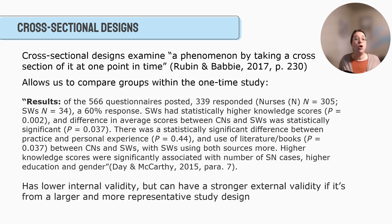So cross-sectional designs examine, according to Ruben and Babi, a phenomenon by taking a cross-section of it at one point in time. Well, you can still compare groups in that study. So this is an example of a study that I found, a social work study. And what they did is they sent out 566 questionnaires. Now about 339 people responded. And you can see that 305 were nurses and 34 were social workers. Then what they did is using the results from this questionnaire, this one-shot questionnaire, they were still able to compare differences between nurses and social workers. They were able to calculate differences between practice and personal experience. So they were able to compare higher knowledge scores with other factors like higher education and gender. This is a great example of they knew they only had one shot. They did just this cross-sectional design. They did this questionnaire and they were still able to get a lot of really good data out of it.